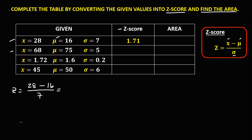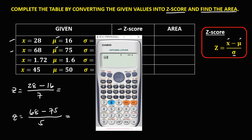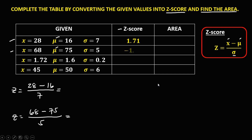For the next values, we have the X value of 68, minus the mean of 75, over the standard deviation of 5. So 68 minus 75 equals -7, then divide by 5 equals -1.4. So the Z-score is negative 1.4.